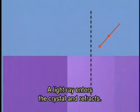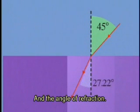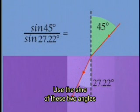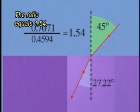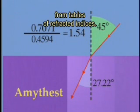A light ray enters the crystal and refracts. Measure the angle of incidence and the angle of refraction. Use the sine of these two angles to calculate the index of refraction. That mineral can be identified from tables of refractive indices.